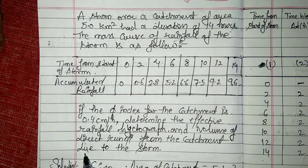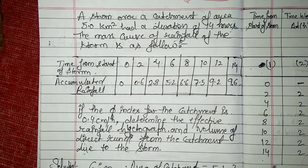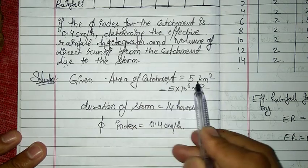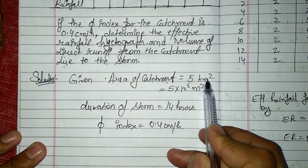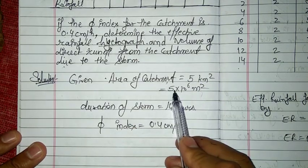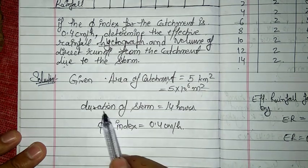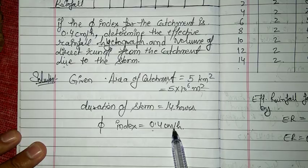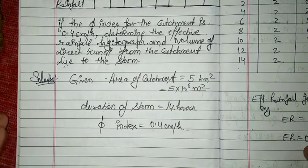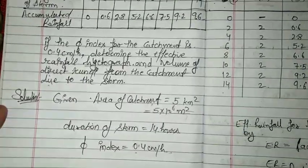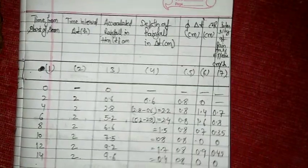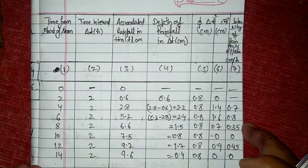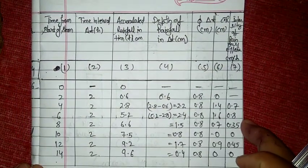Given data: area of the catchment is 5 square kilometers, which equals 5×10⁶ square meters. Duration is 14 hours and the phi index is 0.4 centimeters per hour. Now let us set up a table for this problem.